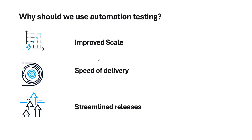So why should we use automation testing? With automation testing, it improves the scale, since once you write the script, you can execute it multiple times whenever you need it. It also improves speed of delivery — if the client requires a feature to be released the very next day, you can just run the automation scripts and get a detailed report. Automation testing tools are more accurate and less prone to error.